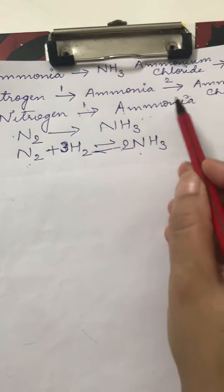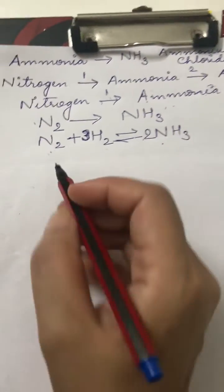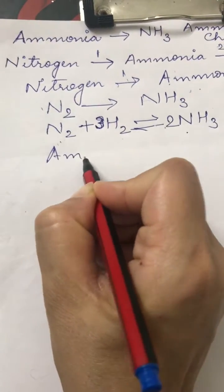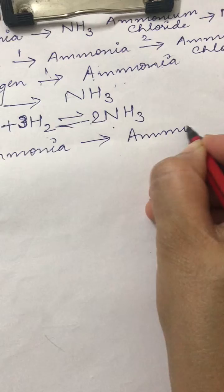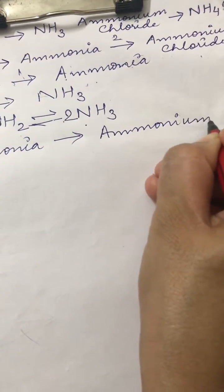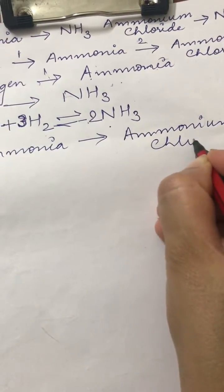So this is the first step. Second step is conversion of ammonia to ammonium chloride. So what do we write next now? Ammonia to ammonium chloride. We have to solve the second part of this equation in this form.